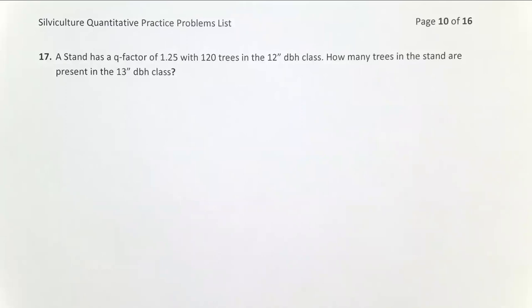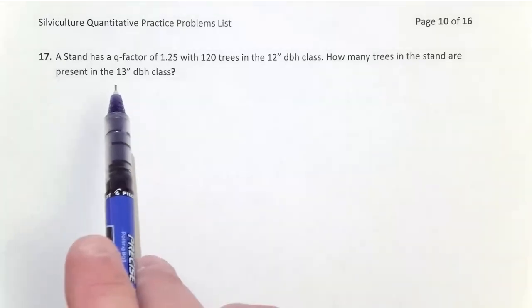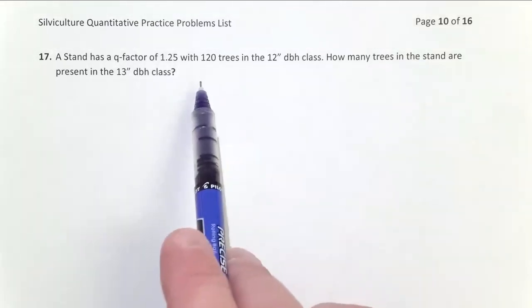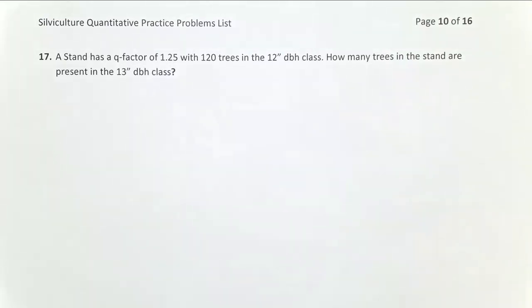Problem 17 is our second Q-factor problem. Our stand has a Q-factor of 1.25, and we know how many trees there are in the 12-inch DBH class.